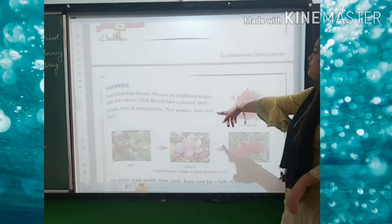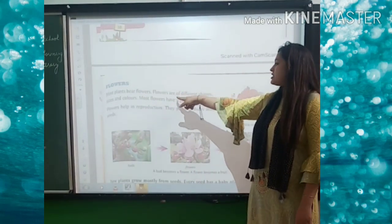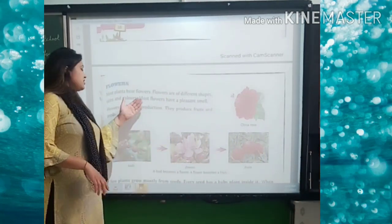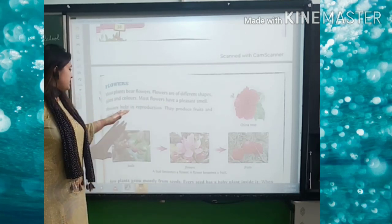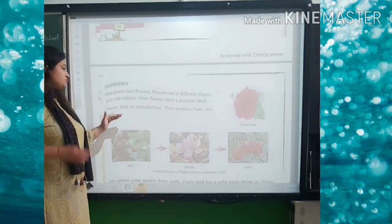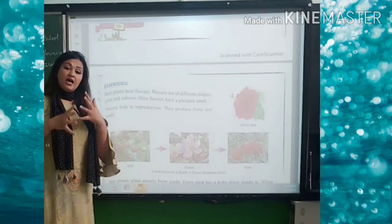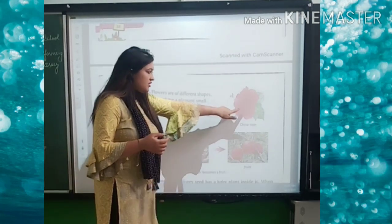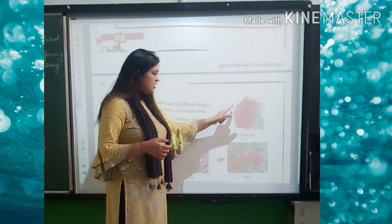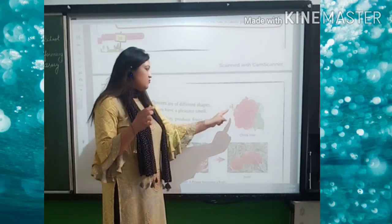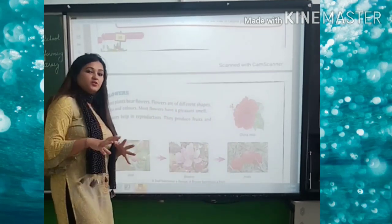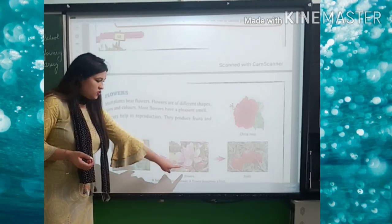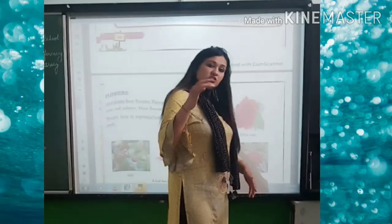Most plants bear flowers. Flowers are of different shapes, sizes, and colours. Most flowers have a pleasant smell. Flowers help in reproduction — they produce fruits and seeds. A flower bud is converted into a flower, and this flower then changes into fruit over time.